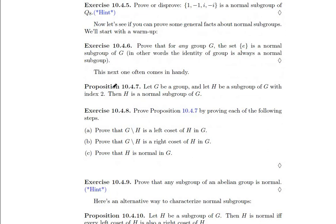Alright, let's see. So here we have a proposition. Let G be a group. Let H be a subgroup of G with index 2. Then H is a normal subgroup of G.